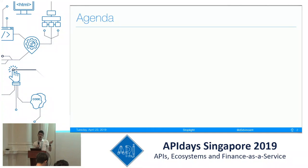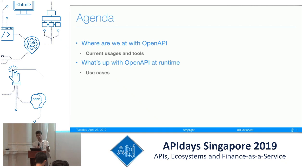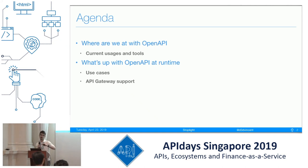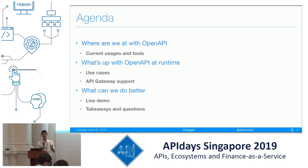What I want to discuss is, first, what is going on with OpenAPI so far in terms of tools and usages on the market right now, and then what is going on with OpenAPI at runtime. We're going to be exploring use cases, API gateway support, but more importantly, what I think we're missing in the lifecycle — because there are a lot of missed opportunities we should pursue. I'll discuss approaches, what we can do better, then hopefully a live demo, and take away some questions about what we should be doing next.